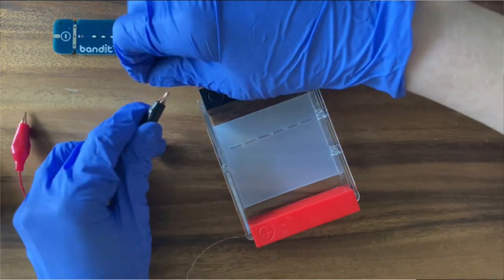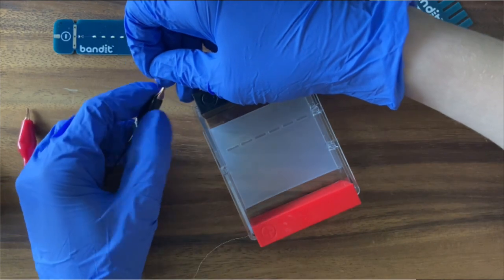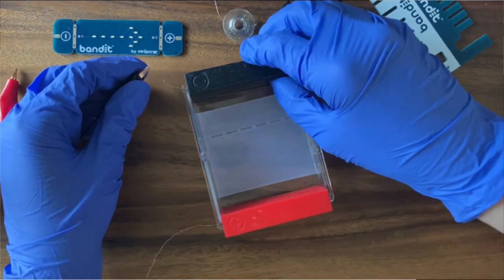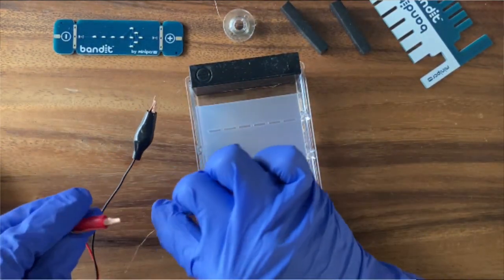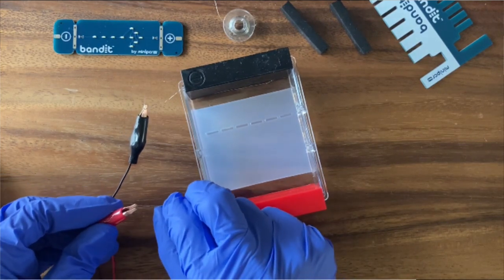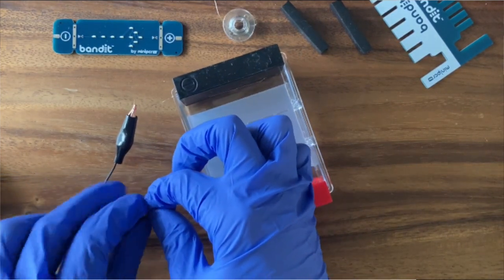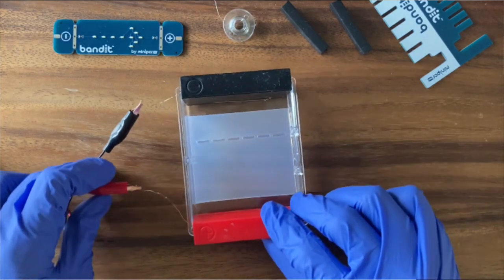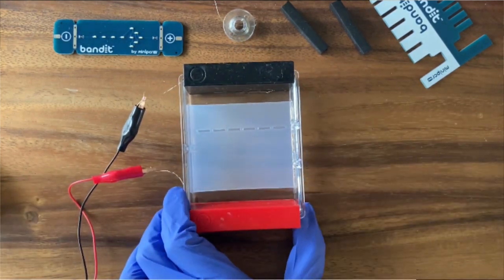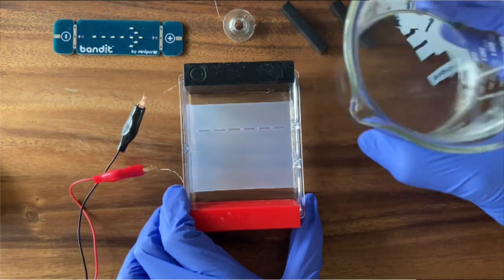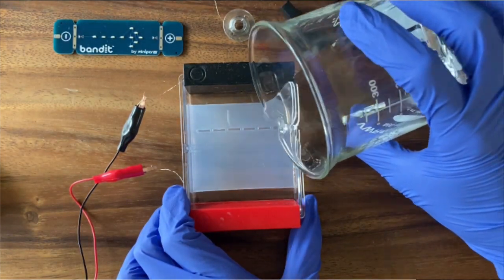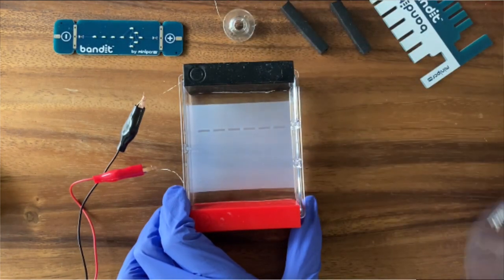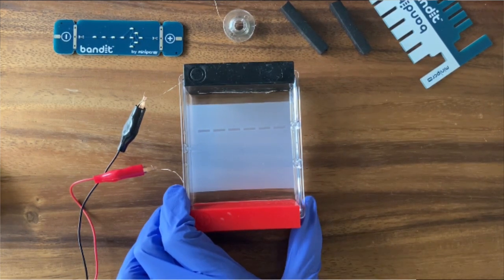I'll grab my alligator clips now, which are what's going to carry electricity into my system. We'll clip that black one on and then I'm just going to wrap the free end of the wire around a little bit to make sure I have good contact there. Then I'll do the same with the red one. Now we have to complete this circuit, and so I'm going to pour buffer over the gel and the electrodes and that buffer is just going to conduct electricity throughout our gel. That completes our electrophoresis circuit.